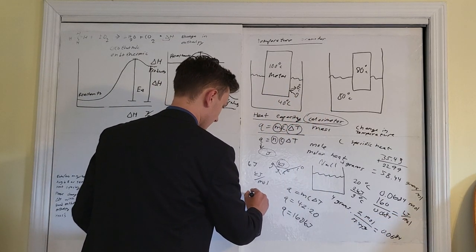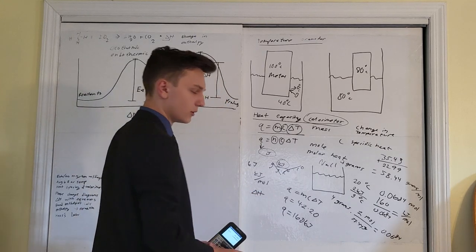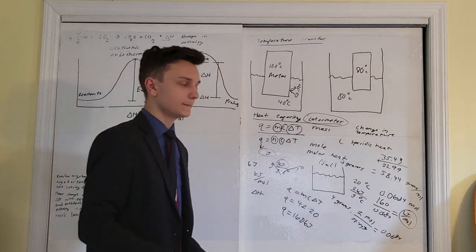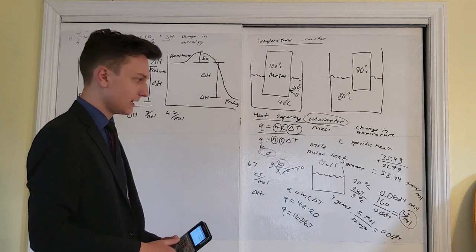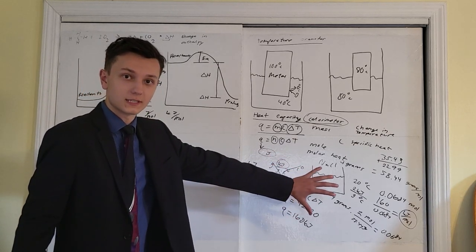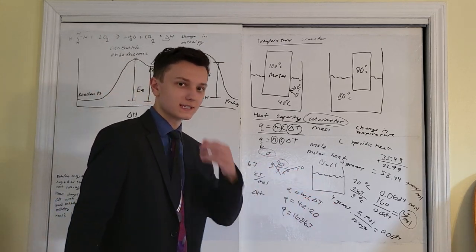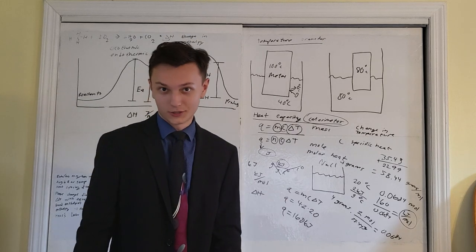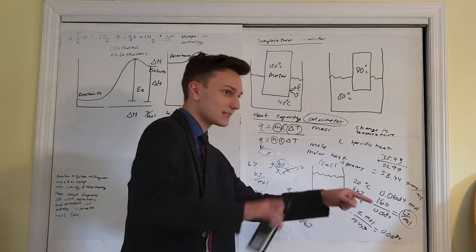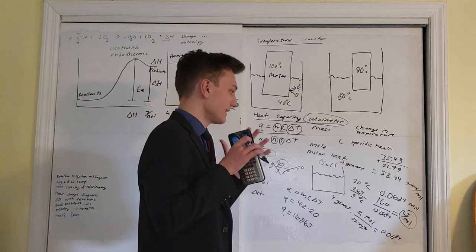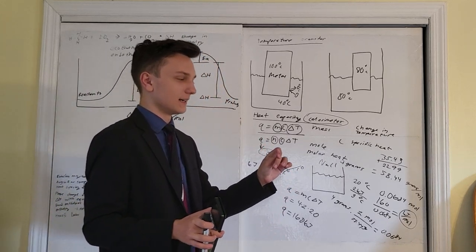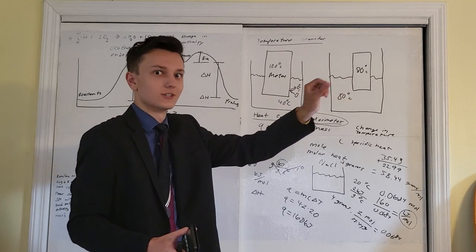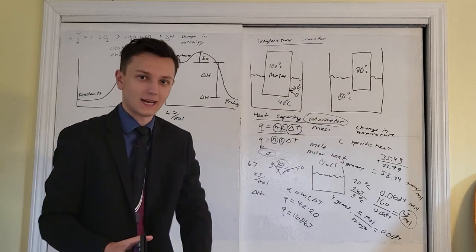Kilojoules per mole is our delta H, our molar change in enthalpy. On the AP Chemistry exam, work is very important. Write it neatly and legibly, following a clear path — start at the top, write lines of equations going down. Don't write sloppily, because the reader can't follow you through your thought process.